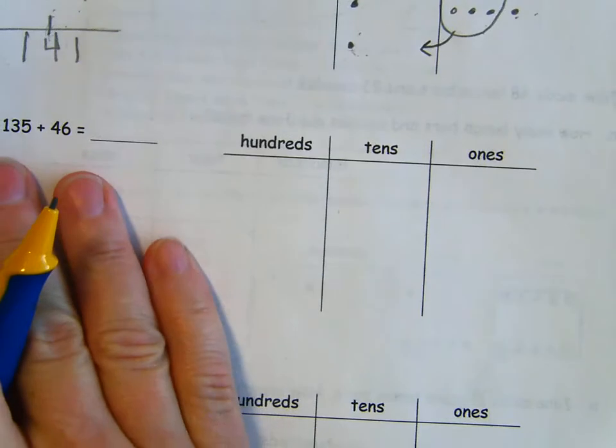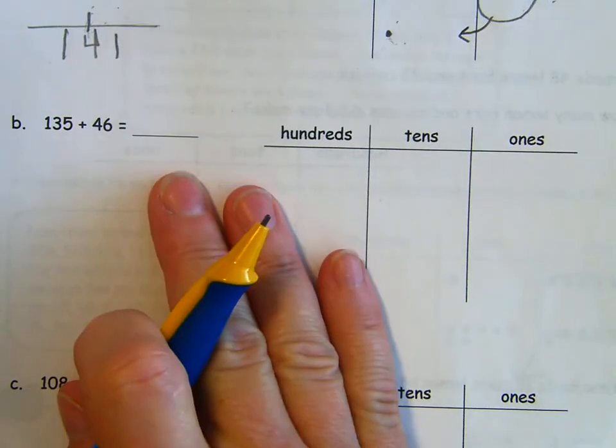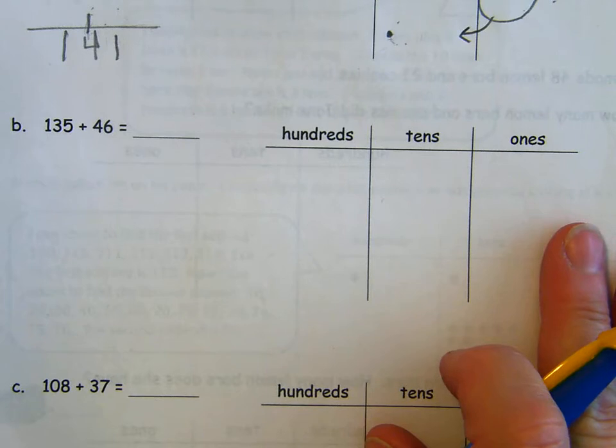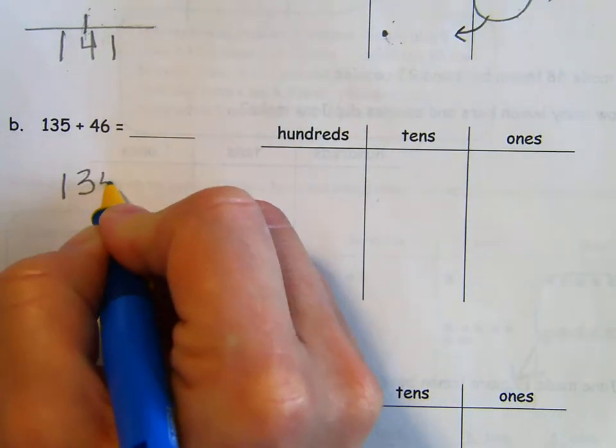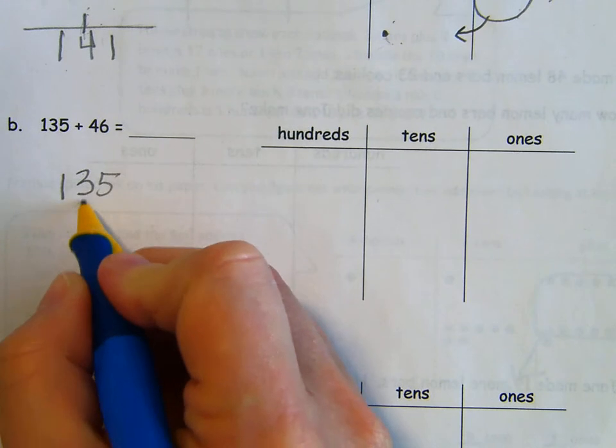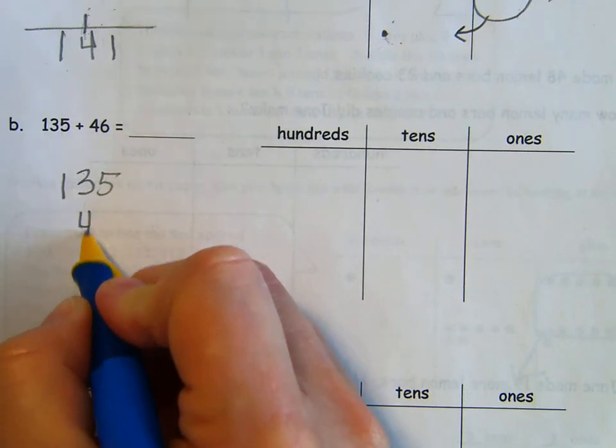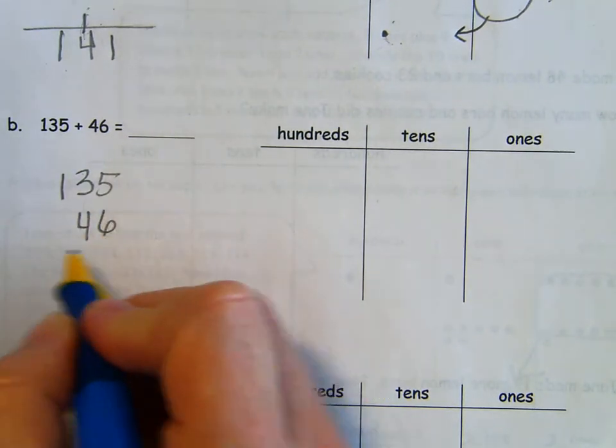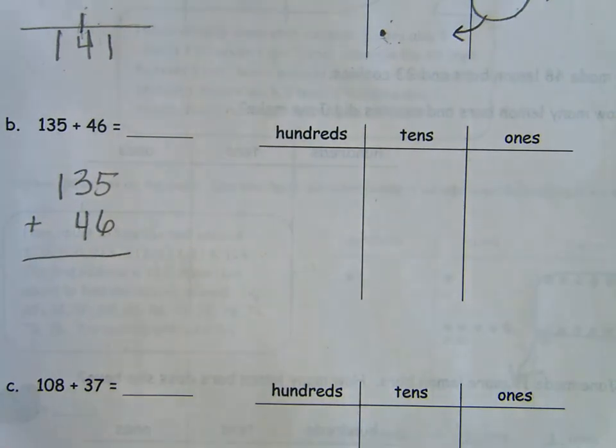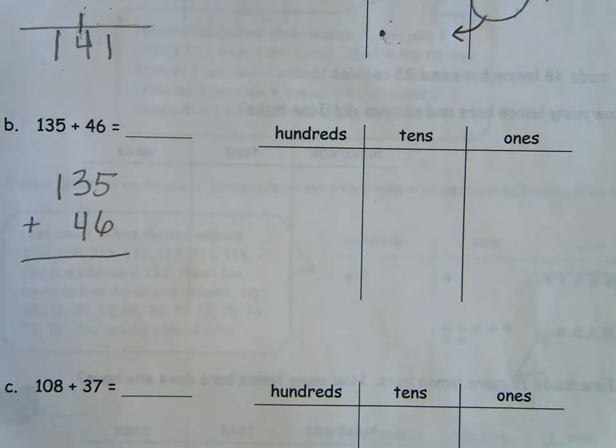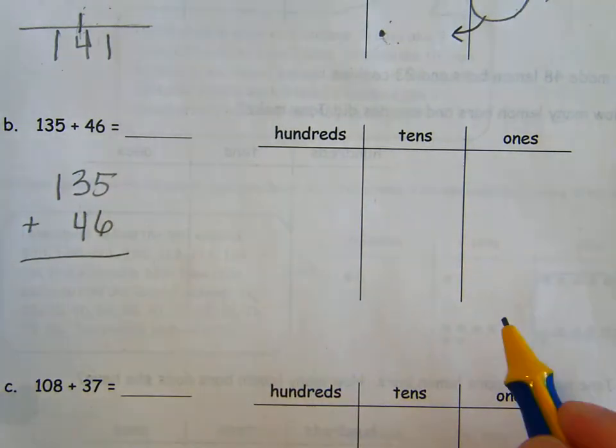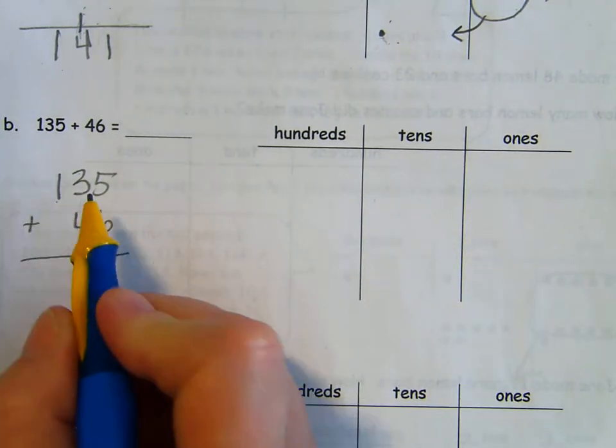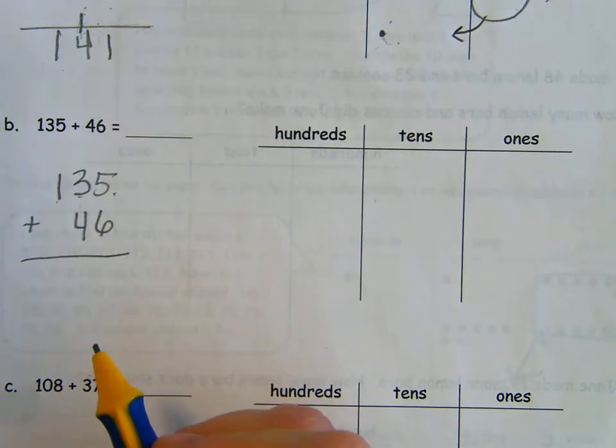Nice. Let's take a look at our next one. 135 plus 46. We're going to do it exactly the same way. We're going to start with our vertical form. 135 and lining up very carefully. I have four tens and six ones. So I want that in the right place. I'm going to add my plus sign so I don't forget what I'm doing. And let's represent 135. There's 100, three tens, five ones.